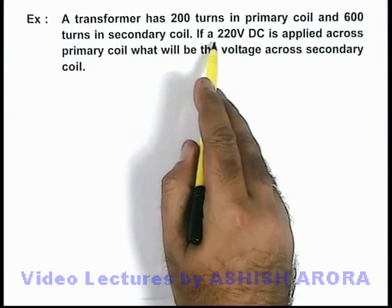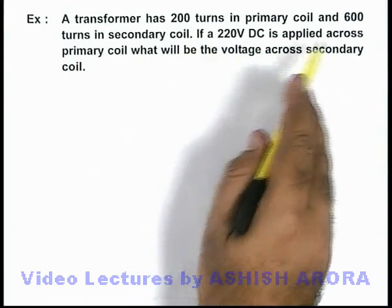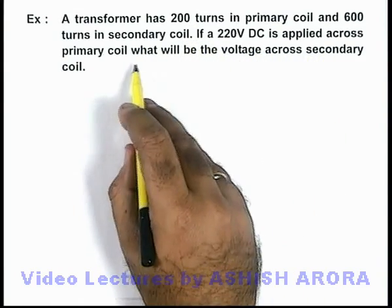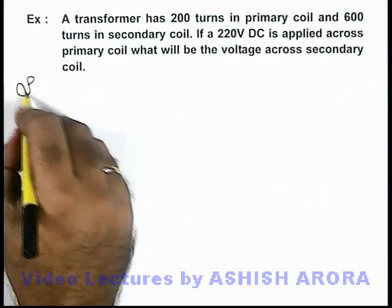Now the problem states: if 220 volt DC is applied across the primary coil, what will be the voltage across the secondary coil?